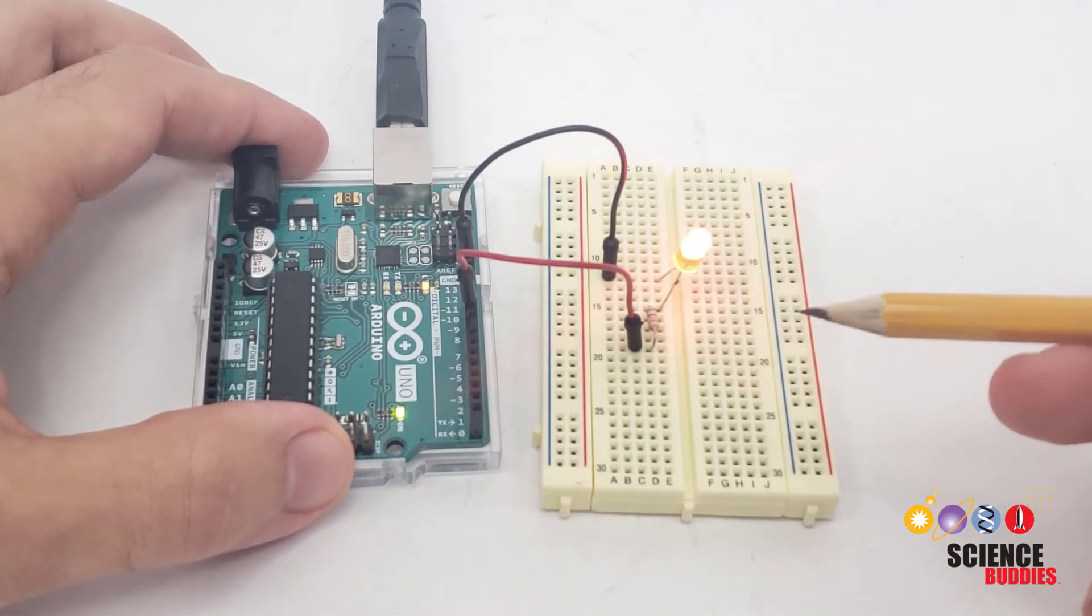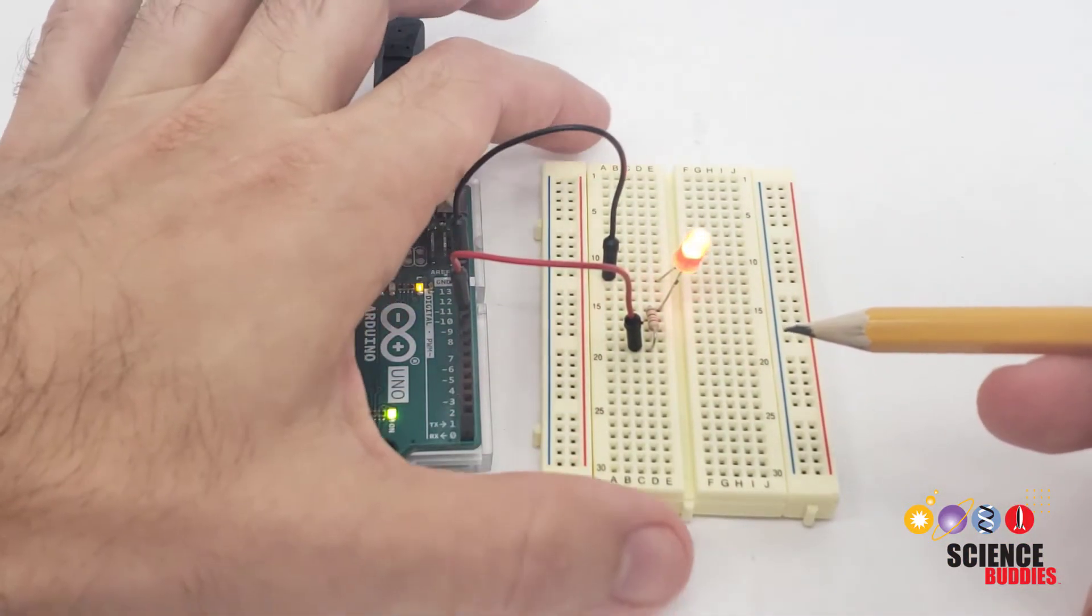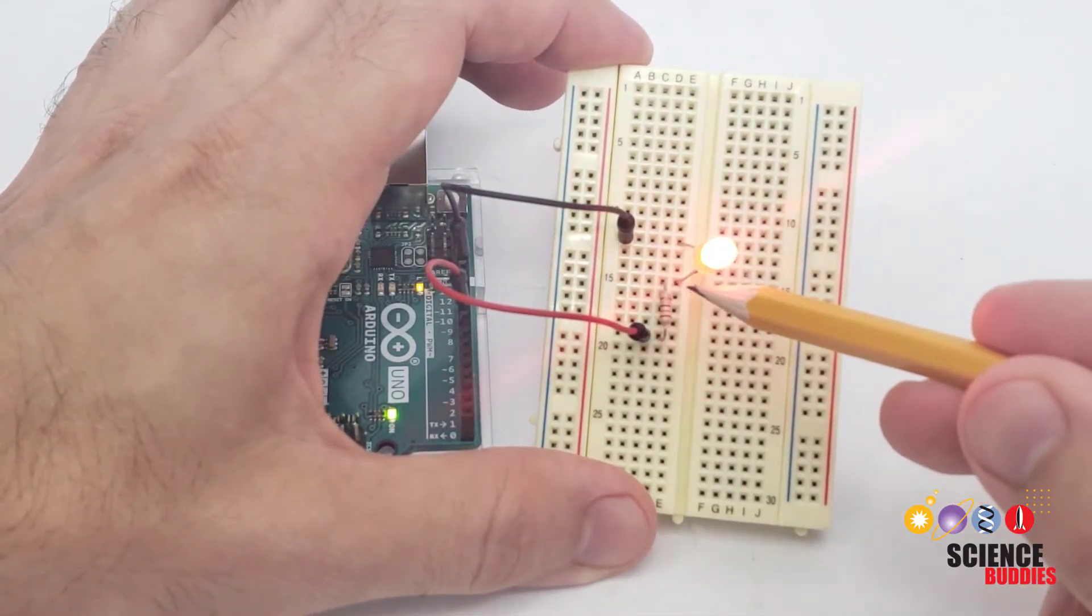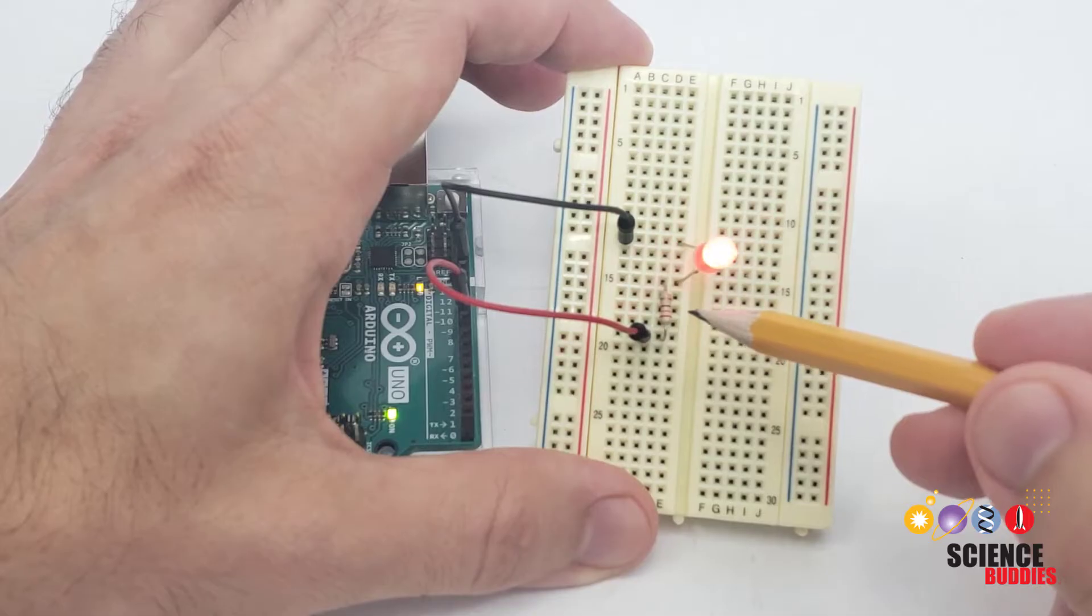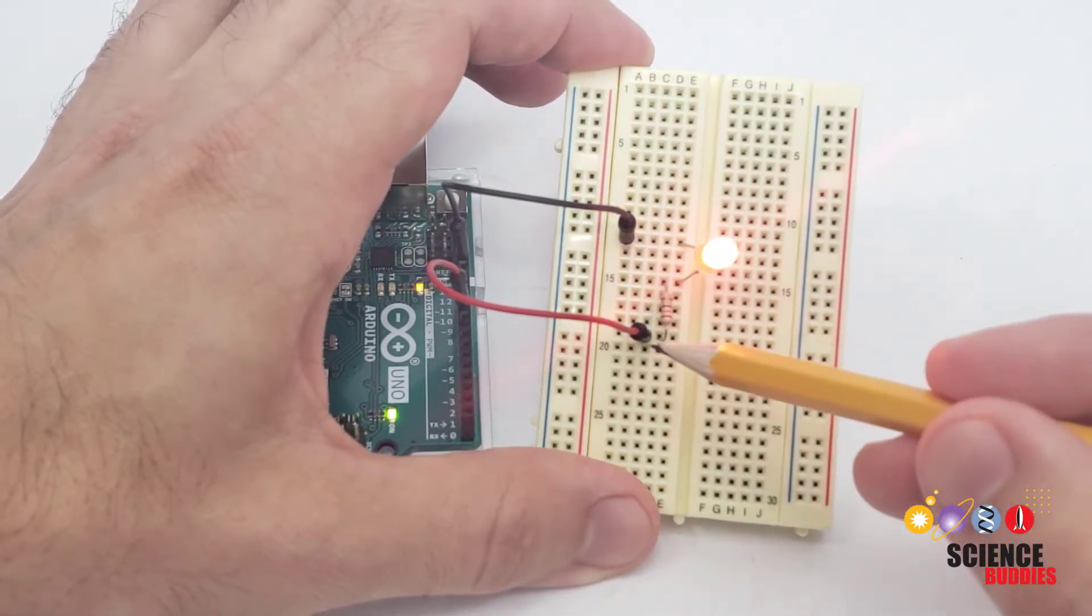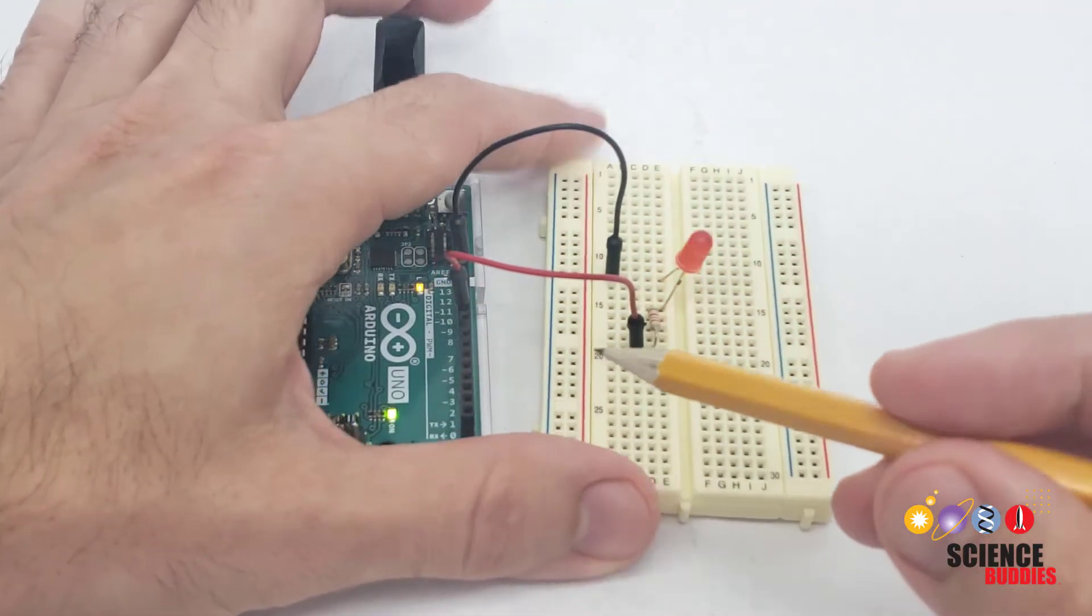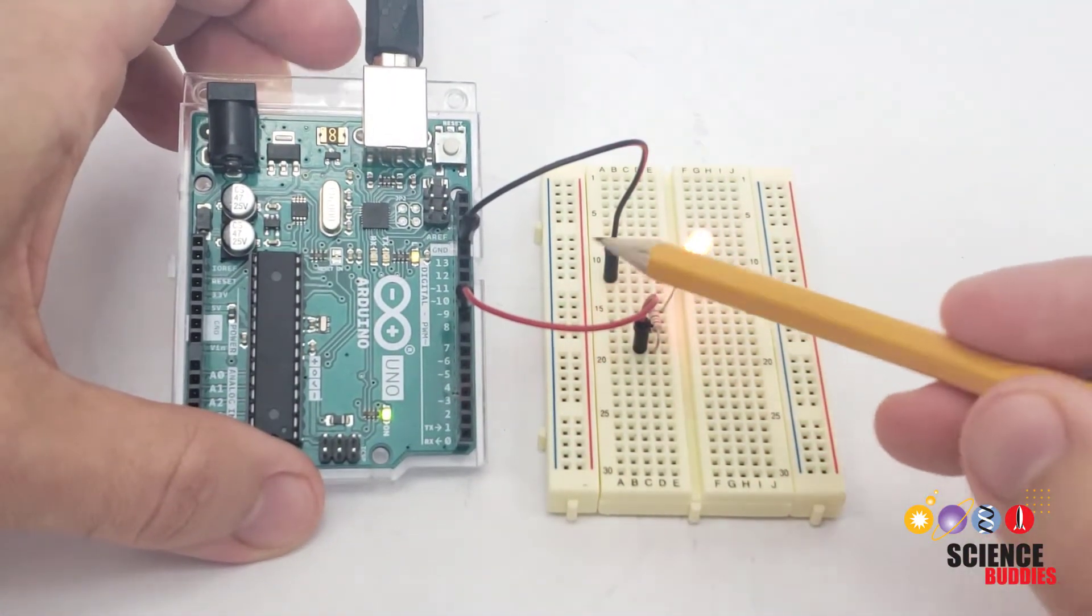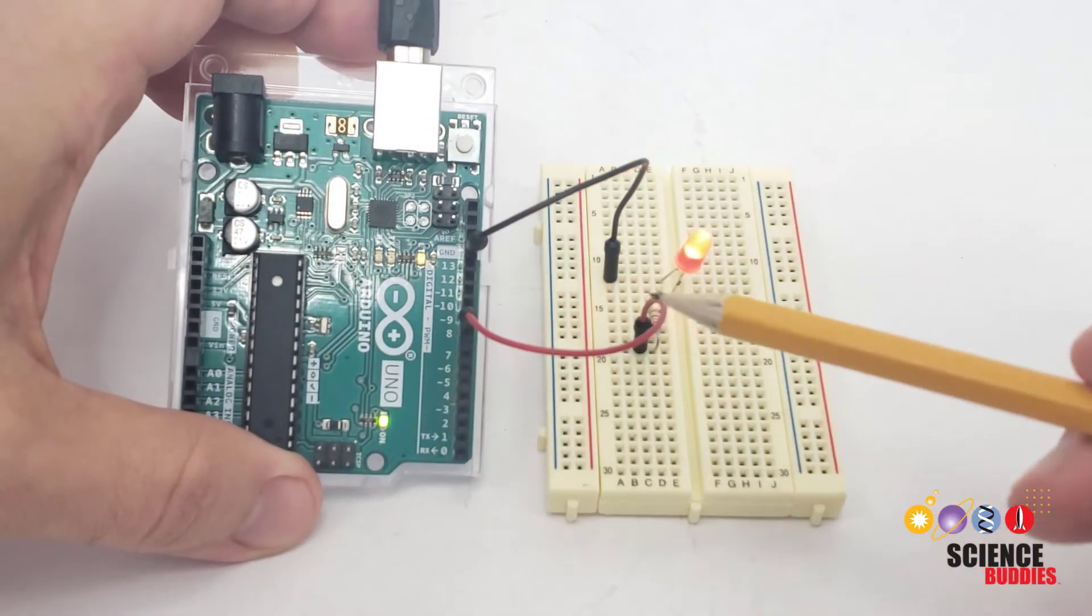The circuit to do this is no different than the circuit you would build just to blink an LED. On the breadboard we have a resistor in series with the LED. We have one end of that circuit connected to one of the Arduino's pins with a jumper wire. We have the other end of the circuit connected to the ground pin with a jumper wire.